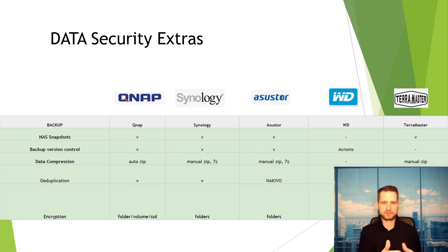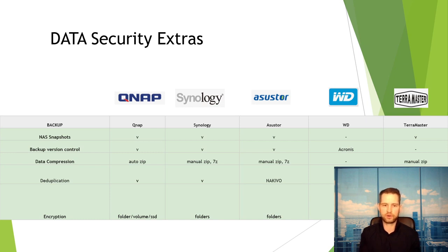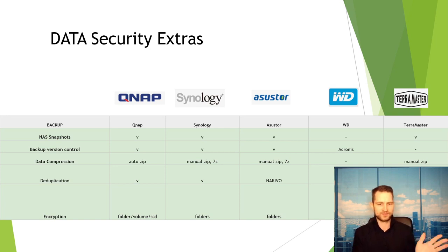For encryption, Synology, ASUSTOR, and TerraMaster support folder-level encryption. WD encrypts the entire NAS. QNAP is the clear winner at the encryption level — not only can you encrypt folders or volumes, you can also use self-encrypting drives like SSDs, which is probably the safest way to keep sensitive data like customer banking information secure.